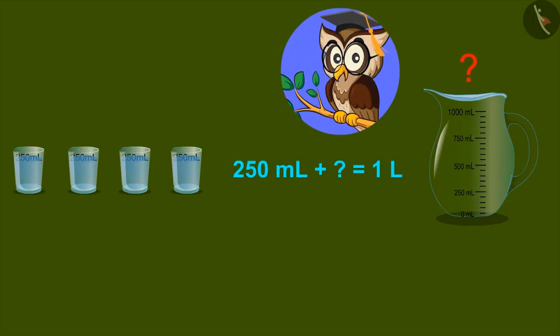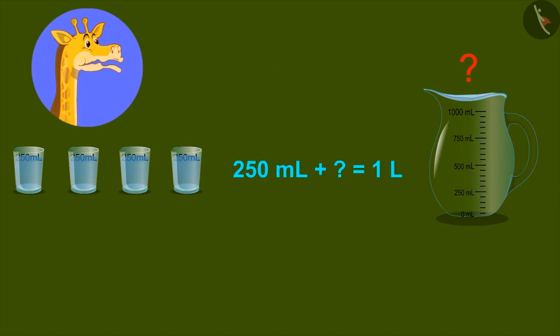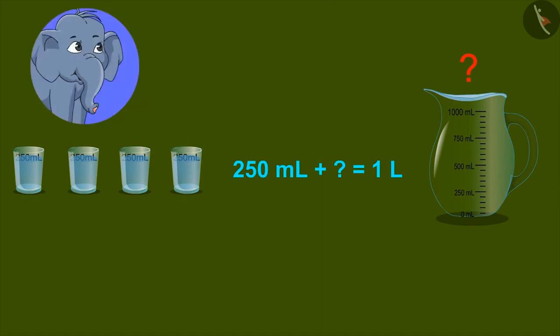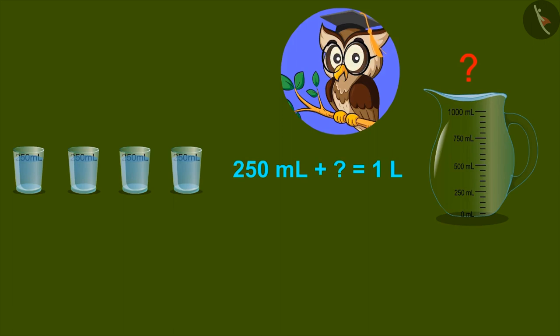For example, do you think that glasses of 250 ml can be combined to form one liter? Yes, it can be made. No, I don't think so. One liter can be made out of 250 ml. So, let's see how 250 ml and other units can be combined to form a liter.